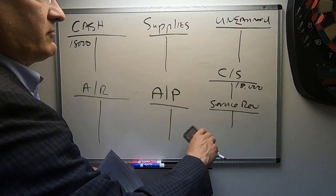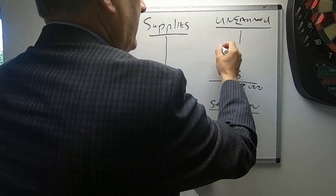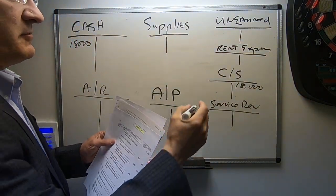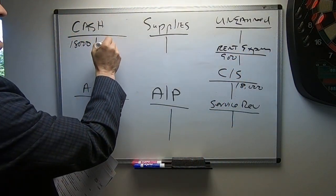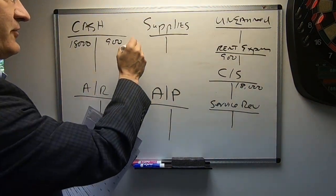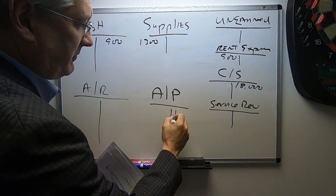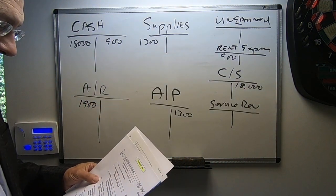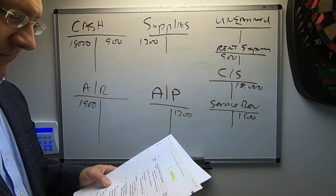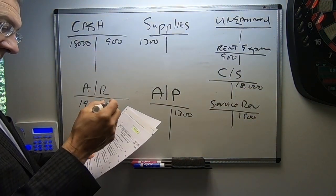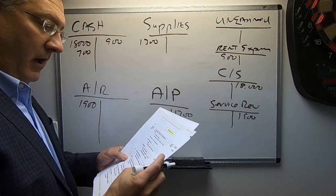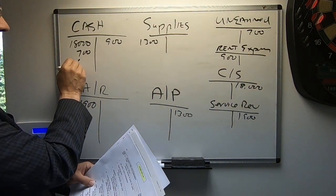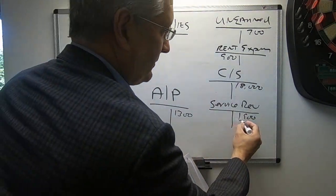The next transaction was rent expense — debit to rent expense for $900 and a credit to cash for $900. The next transaction was a debit to supplies for $1,300 and a credit to accounts payable for $1,300. Next was a debit to accounts receivable for $1,900 and a credit to service revenue for $1,900. Then a debit to cash for $700 and a credit to unearned revenue for $700. Then we debited cash for $2,800 and credited service revenue for $2,800.